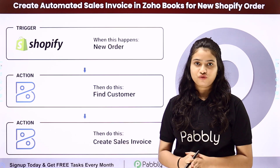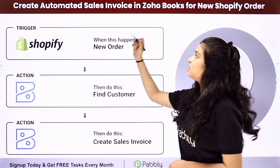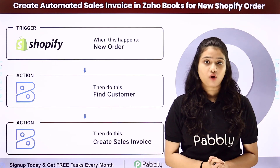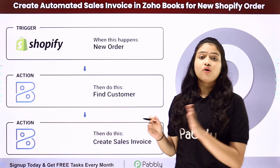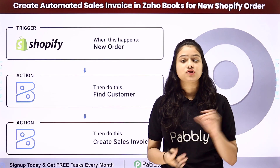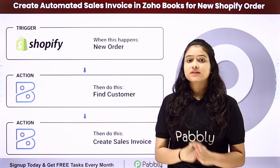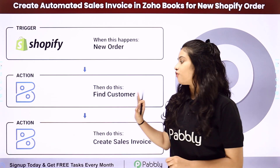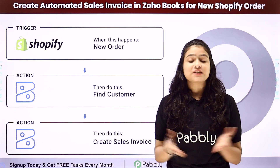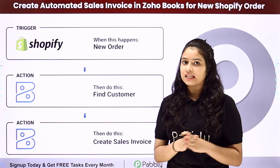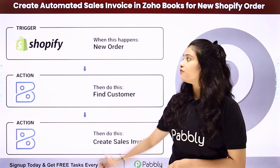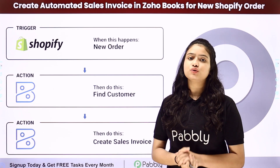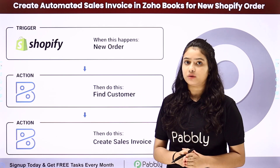Hello everyone. In this video we are going to learn how to create automated sales invoices in Zoho Books for new Shopify orders. I want that whenever a new order is placed on my Shopify account, automatically by using the same order details, a new invoice should be created for the same order in Zoho Books. To do this, we will integrate Shopify with Zoho Books using Pabbly Connect.